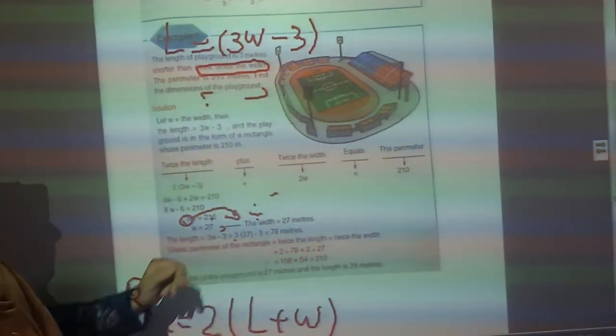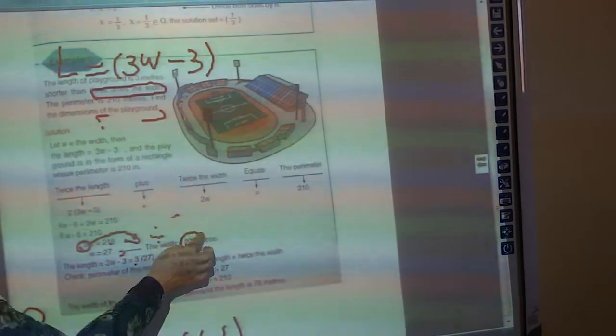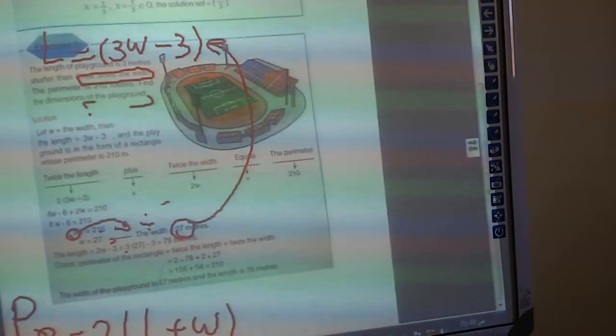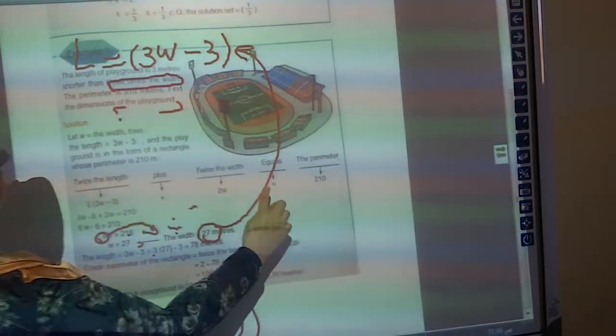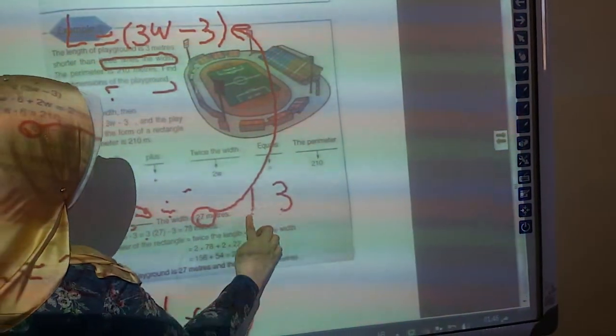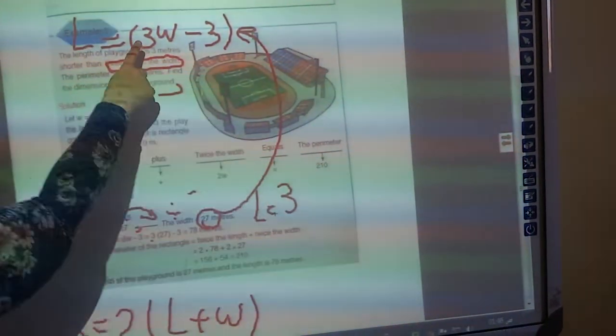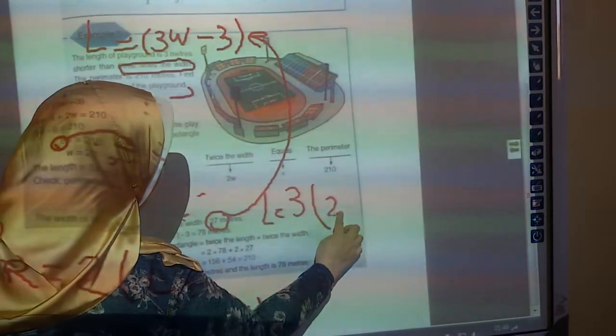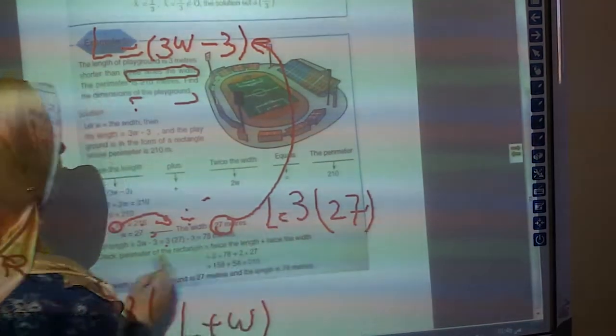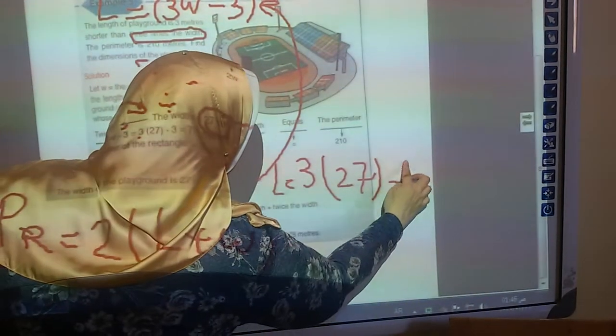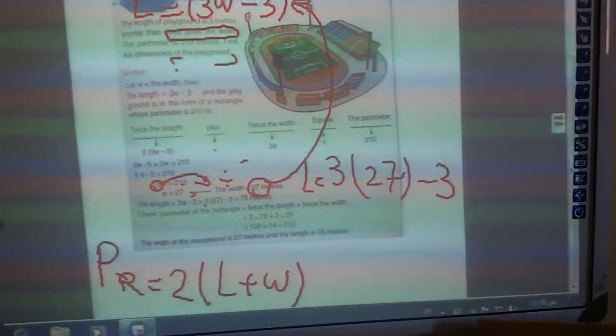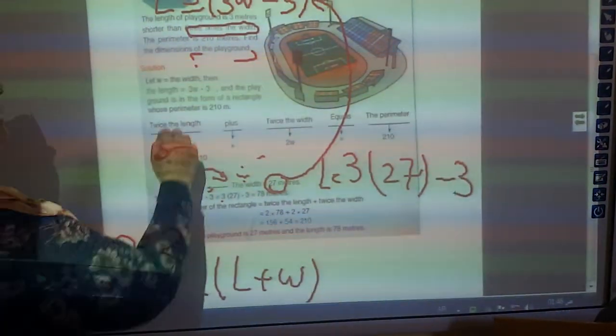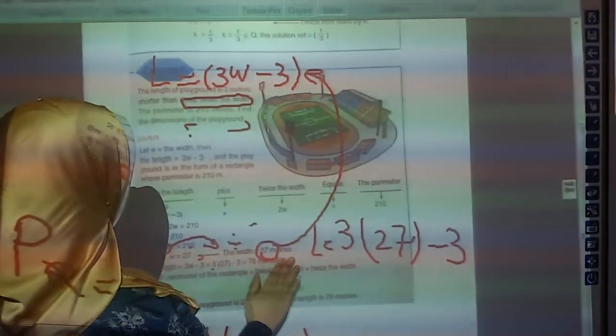I'm going to take this 27 and substitute here in this equation. Let's see. I'm going to write L equals 3W which is 27. 3 times 27 minus 3. It will give me 78. It will give me 78.